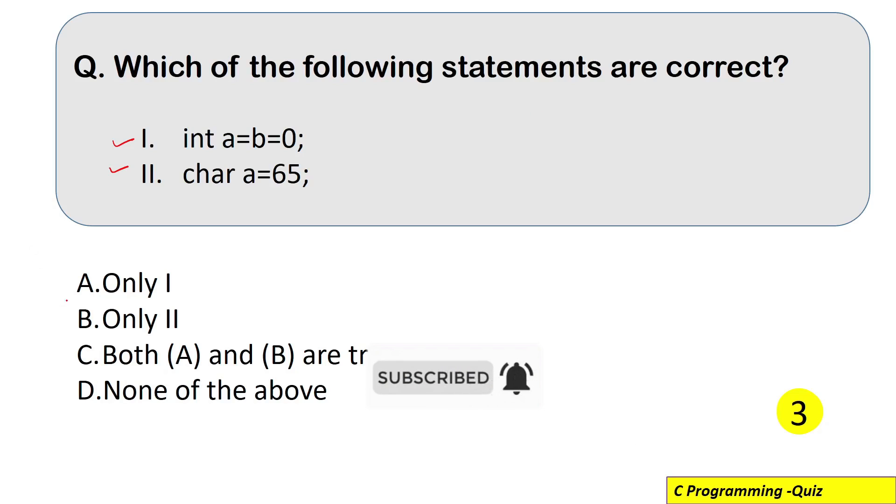You are given these four options. First option says that only first statement is correct. Then second says only second statement is correct or both A and B, that is both these statements are correct, or none of the above.